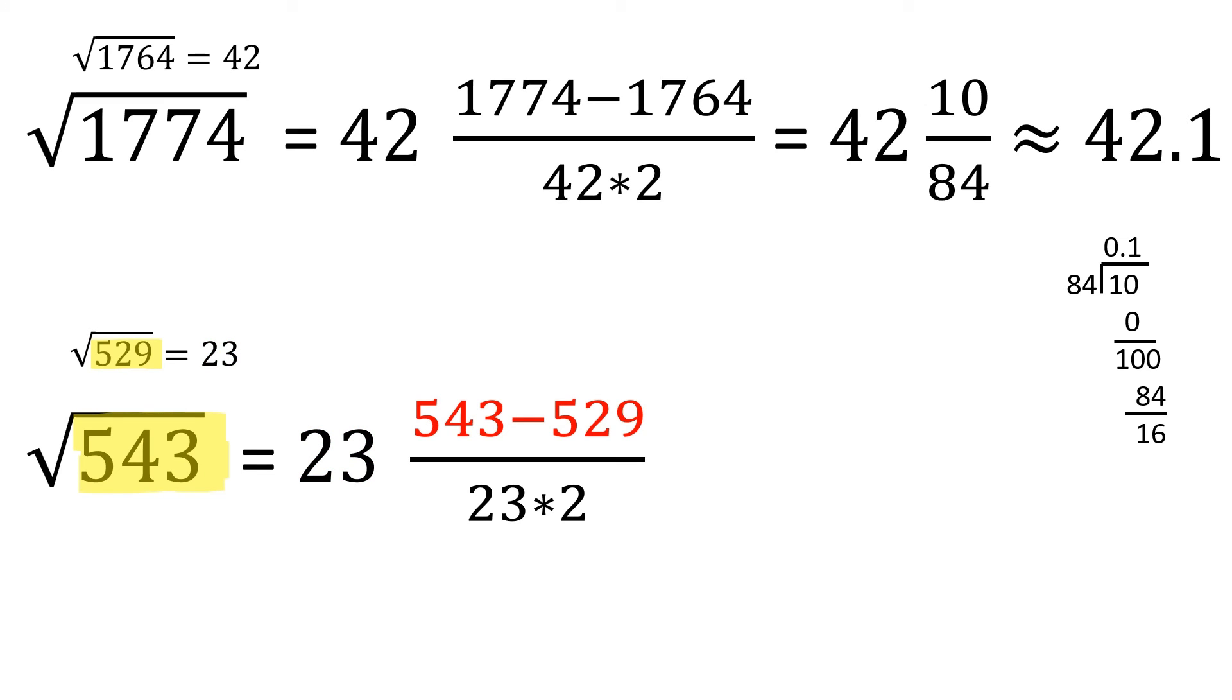In the numerator, we will have the difference of 543 and 529. In the denominator, we'll have 23 times 2.